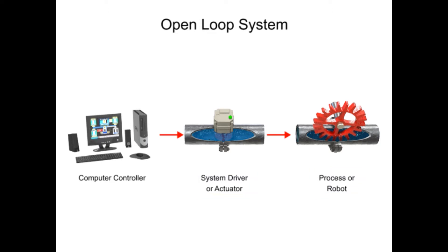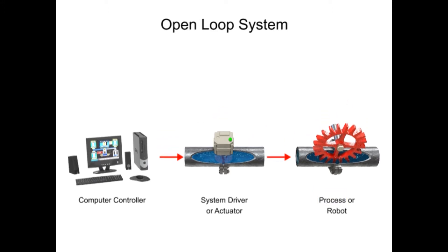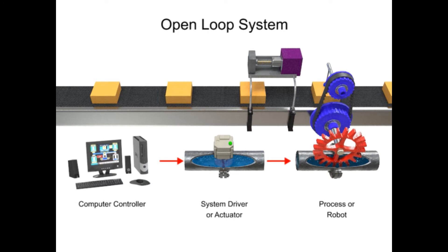The term process in this illustration simply means any piece of equipment that accomplishes work. This could be a robotic arm, a motor, or an engine. For the purposes of this module, we'll focus on robots. Once the signal is received, the robot performs the appropriate action.